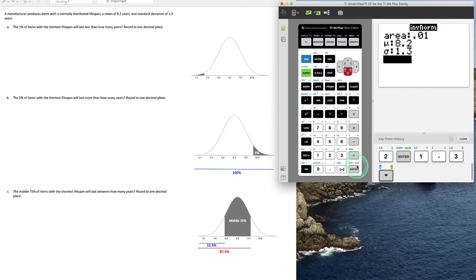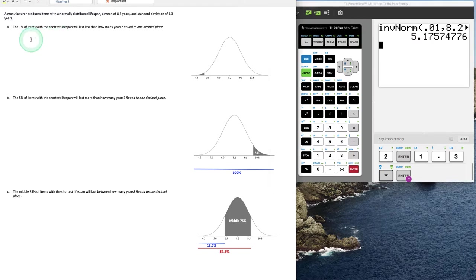If we go ahead and paste that in, we get the years of 5.2 rounding correctly to 1 decimal place. So the lowest 1% of lifespans is going to be less than 5.2 years.